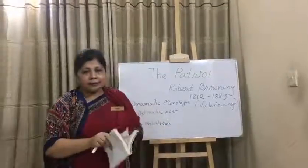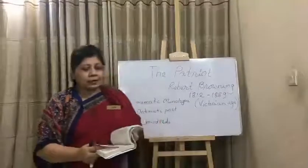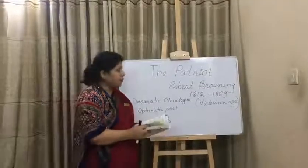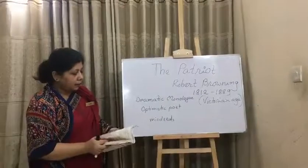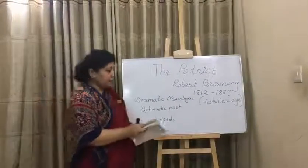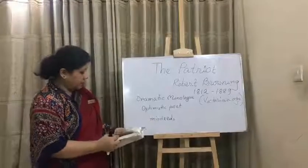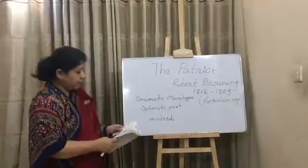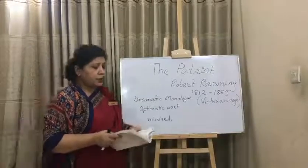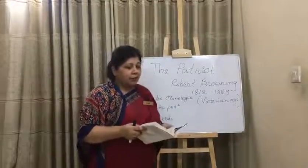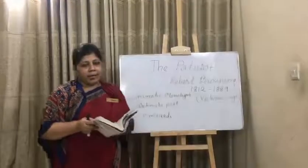So students, that is the poem. That shows the two contrasting scenes of the life of the Patriot. The poet Robert Browning very clearly shows the two contrasting scenes from the first. Now I am going to paraphrase line to line. It was roses, roses all the way, with myrtle mixed in my path like mad.